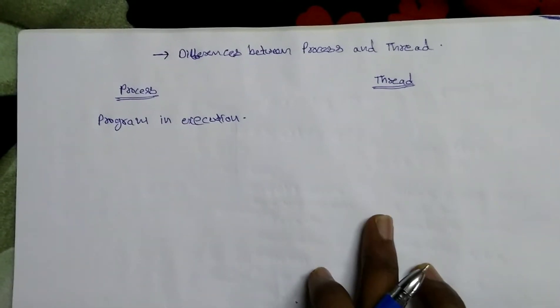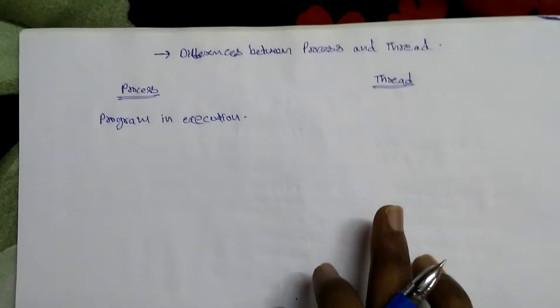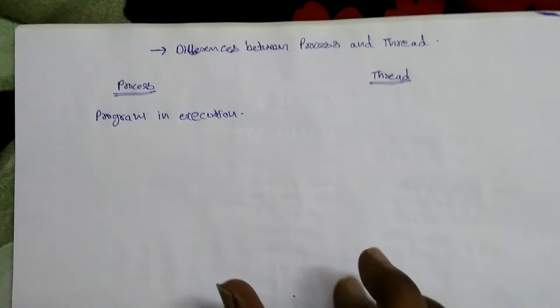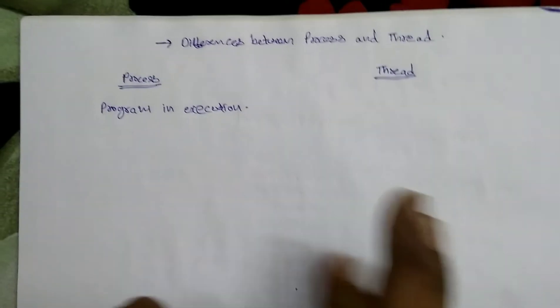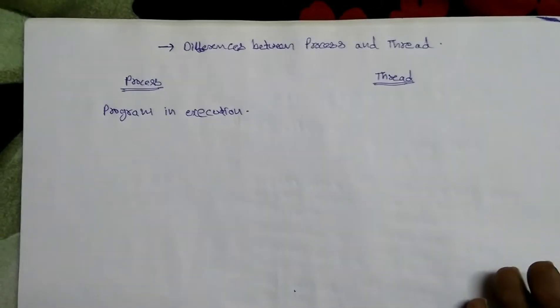So what is a thread? A thread is just a small part of a process. A process can create many threads.